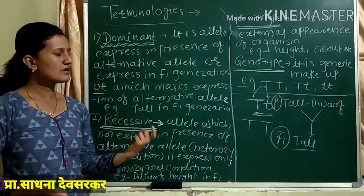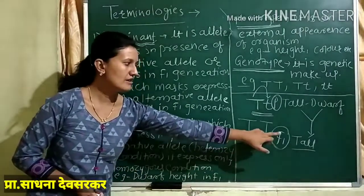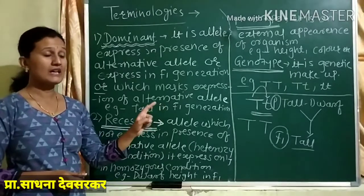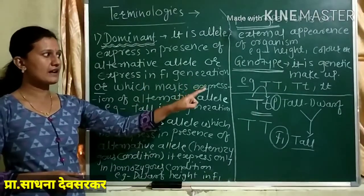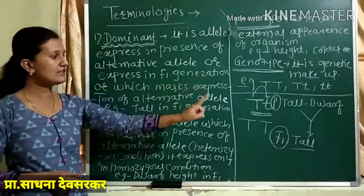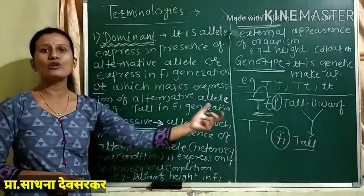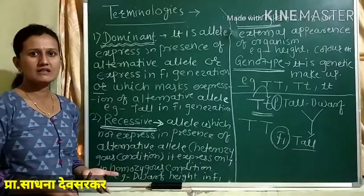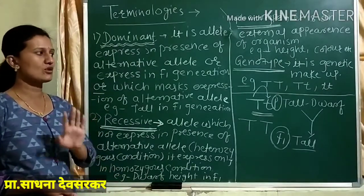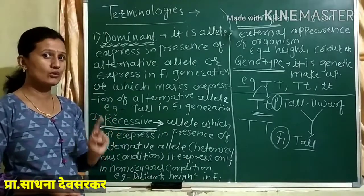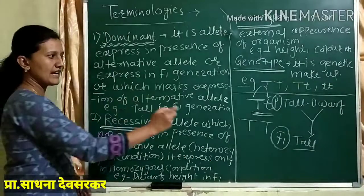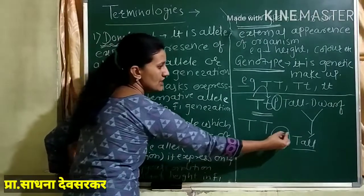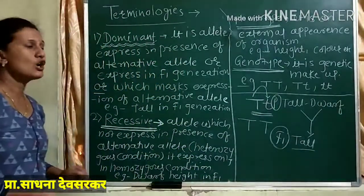When a cross is made between tall and dwarf plants, in the F1 generation there is again expression of tall character — but that tall is a hybrid tall. Now consider that the parents have a dwarf character too. If one parent is tall and the other is dwarf, the next generation is tall. The question arises: where has the dwarfness gone? The dwarf character is there, but it is not expressed. Tallness is expressed but dwarfness is not. That means the tall character has expressed while the alternative allele is present. But in F1 generation, this character — tallness — is expressed. That is the dominant character.